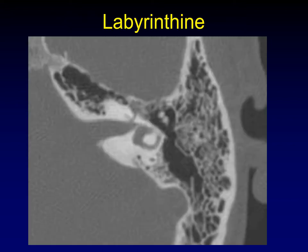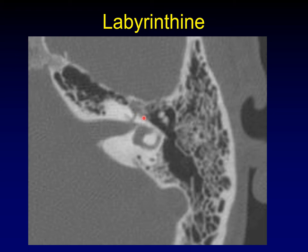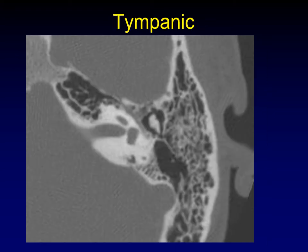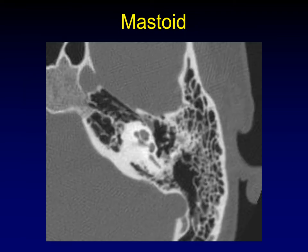The labyrinthine segment traces a smooth, graceful arc forward from the fundus of the internal auditory canal, all above the level of the cochlea, then hits the geniculate ganglion and makes a U-turn to become the tympanic segment. As it runs along the medial aspect of the middle ear cavity, that's the tympanic segment. Once it gets behind the middle ear cavity, it takes a straight up-and-down configuration, and on an axial image in cross-section you see it as a circle — that's the mastoid segment.